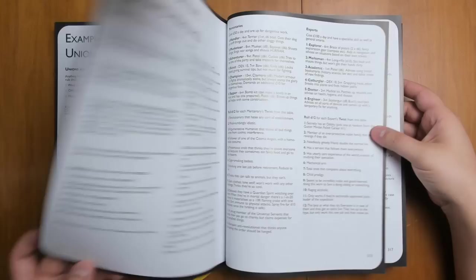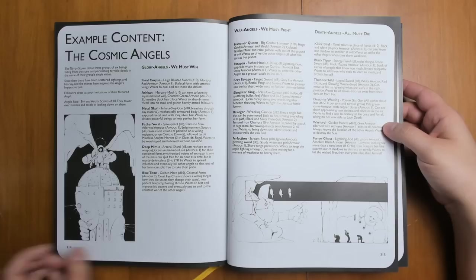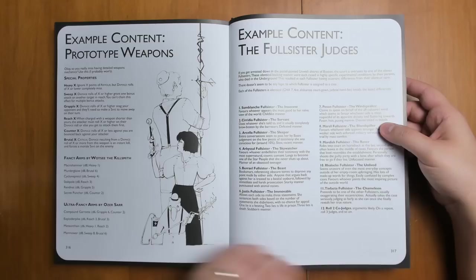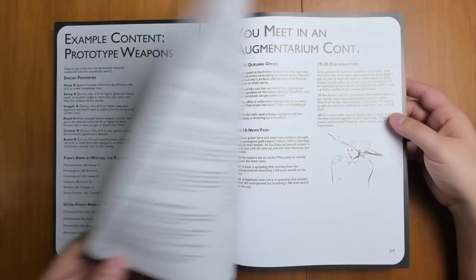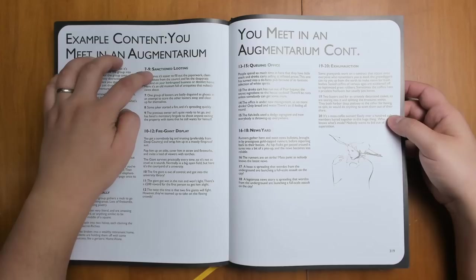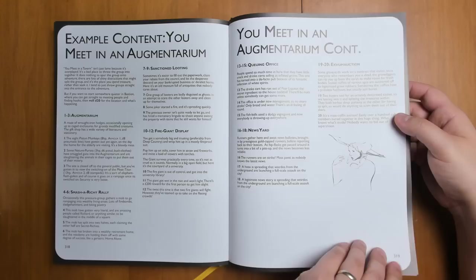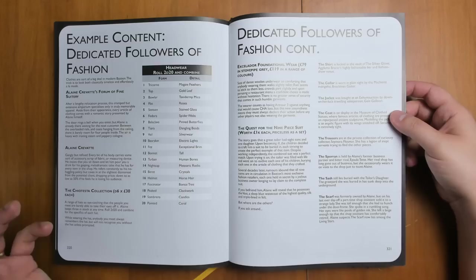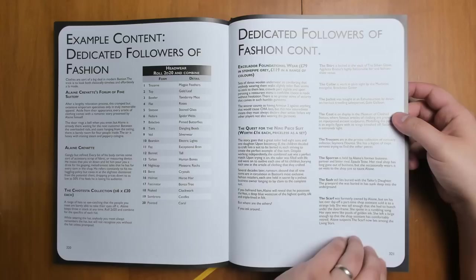We have some example content, unions and rituals. We have some undergangs that you could be fighting. Some hirelings. The cosmic angels that you might encounter from the living stars. Weird prototype weapons. Some strange NPCs that you might use. And ways for your PCs to meet up. Instead of meeting in an inn, you can meet in the Augmentarium or the Smatcher Ritchie Rally. Or the Sanctioned Looting or the Fire Giant Display. Along with some different flavor for that. So just to throw your PCs into a situation where things are chaotic, they're sort of in media res, and they have to act immediately.